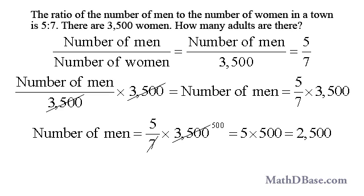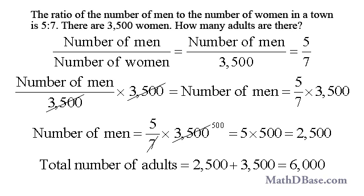We can determine the number of men by multiplying both sides of the equation by 3,500. The right side can be simplified by first dividing 3,500 by 7 to get 500, then multiplying 500 by 5 to get 2,500. The number of men is 2,500, so the total number of adults is 2,500 plus 3,500, or 6,000.